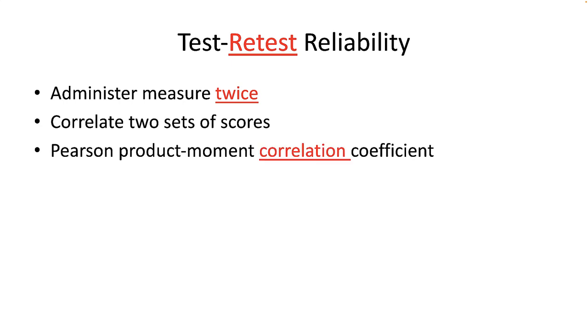Test-retest reliability is simply a correlation between scores on two administrations of the same test given to the same persons spaced out over time. If scores are exactly the same for all persons on both administrations, the coefficient would be a perfect 1.0 — but that never happens. Invariably, the correlation across time varies. People change, times change.